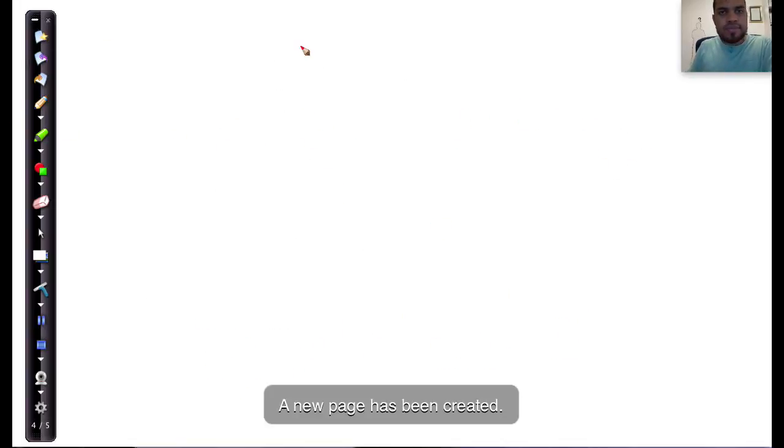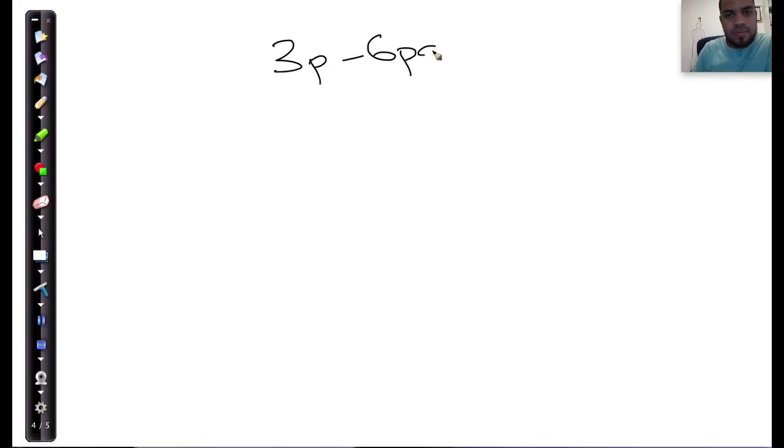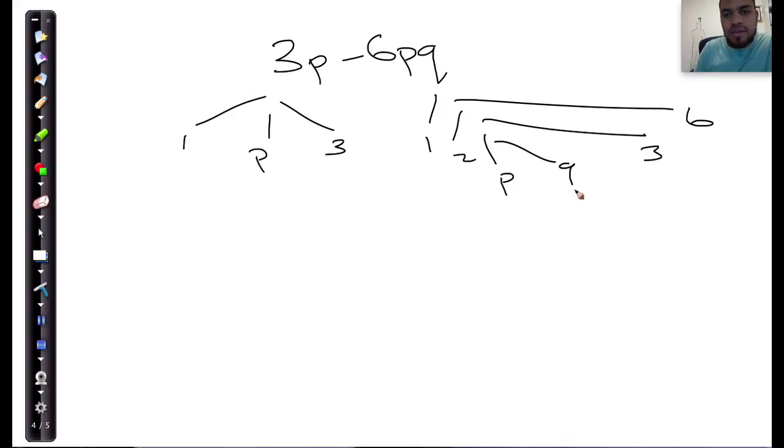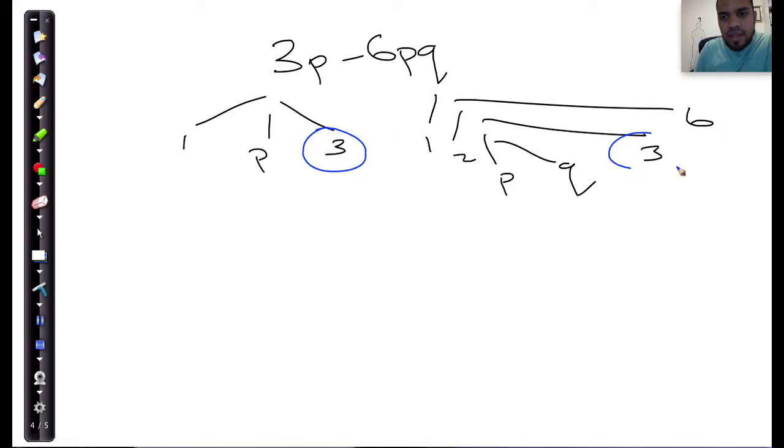Can we do another example? This example is 3p minus 6pq. What are the factors over here? It's just going to be 1 and 3 and p. And the factors on this side are going to be 1 and 6, 2 and 3, and then obviously p and q. Now, my question over here is, what do you see in both? The highest. The highest that you see in both of here is 3 and 3, and you also see p and p.